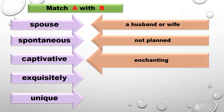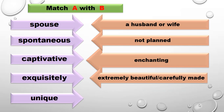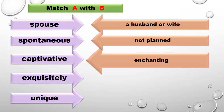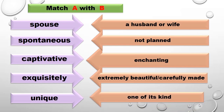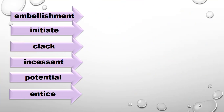Next is 'enchanting.' Enchanting means attractive. Now the next word is 'exquisitely,' which means extremely beautiful or carefully made. And 'unique' means one of its kind — something special.